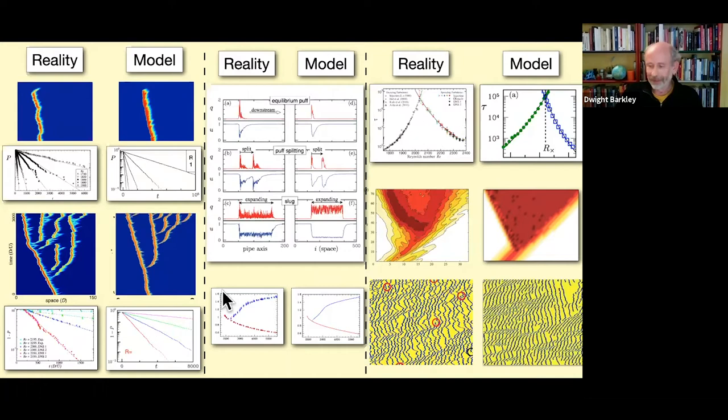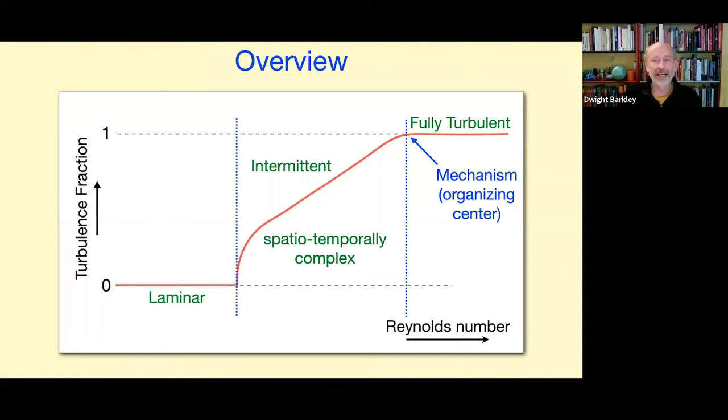So I've discussed the origin of intermittency in these flows — the basic cause, why it exists. Now I want to turn to the second part: the critical point and the onset of turbulence. This brings me to the issue of statistical phase transitions, originated in the early 1980s with papers by Janssen and Grassberger. They described statistical phase transitions applicable to many systems — heterogeneous chemical reactions, forest fires, flow through porous media, flu epidemics.